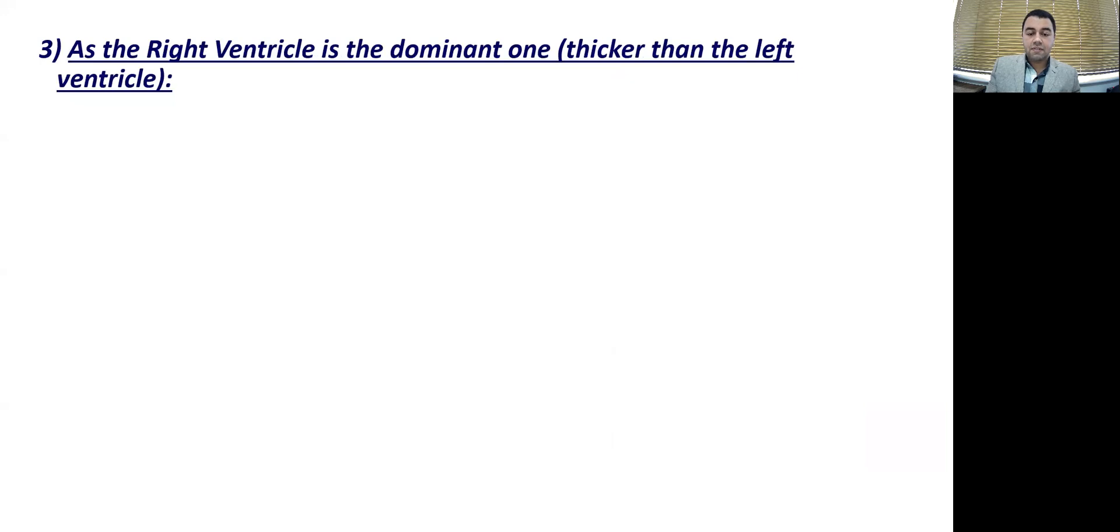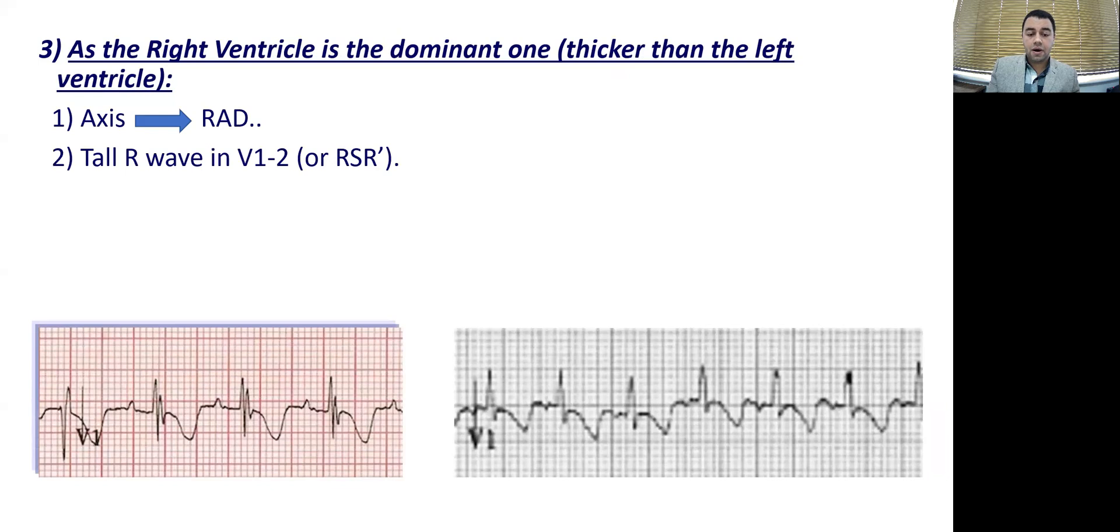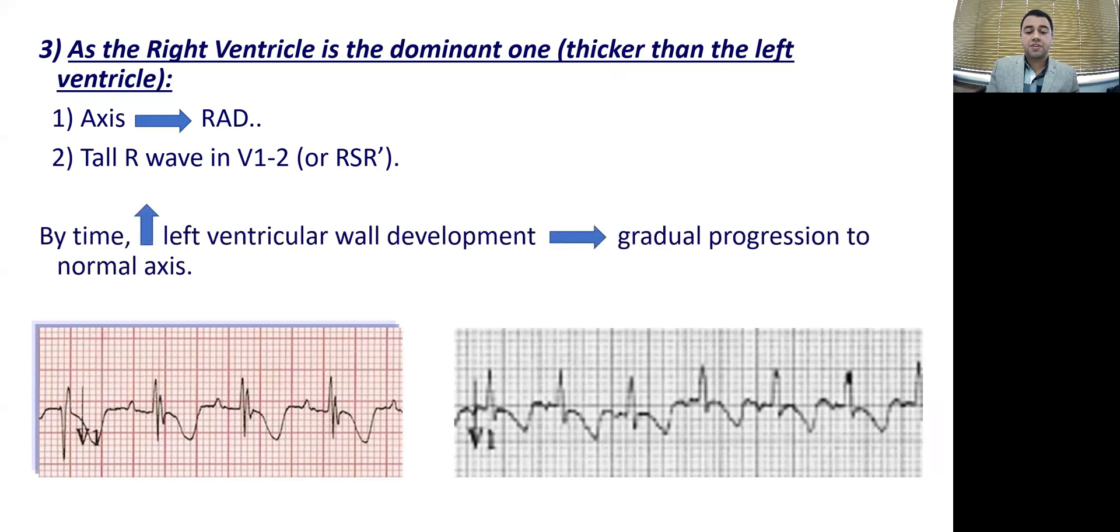Let's move on. We know that the right ventricle is the dominant one. And we know now why it's thicker than the left. Based upon this, that will affect the ECG dramatically. You will get a right axis deviation based upon that. And you will get a tall R or RSR dash in V1 and V2. You will get a right bundle branch block picture in the ECG. And that is because of the difference in thickness between right and left compared to adults. And by time, the left ventricle will start getting more developed. And gradually, the axis will gradually progress to be a normal axis. And the right bundle will gradually disappear. That is the third difference between adult ECGs and pediatric ECGs.